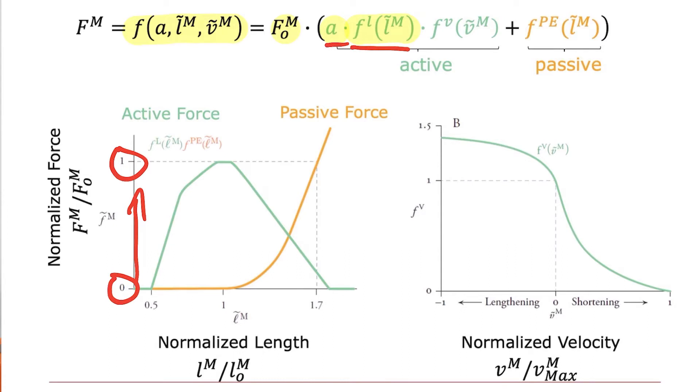The third term in this segment of the equation is the force velocity multiplier, and given a normalized velocity, whether the muscle is shortening or lengthening, we can get this force velocity multiplier here.